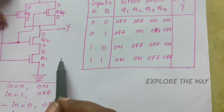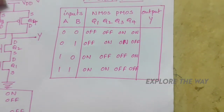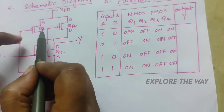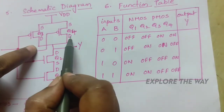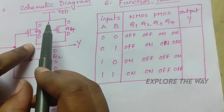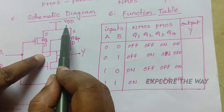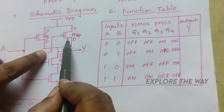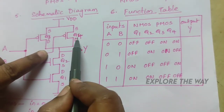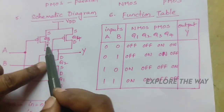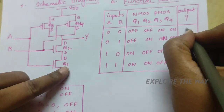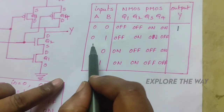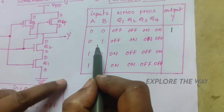Since Q3 and Q4 are both in the on state, there is a path from VDD to the output through Q4 or Q3, so the output is 1. In the second case, when one of the inputs is 0, the corresponding PMOS transistor — either Q3 or Q4 — is in the on state, providing a low-resistance path from VDD to the output, so the output is again 1.